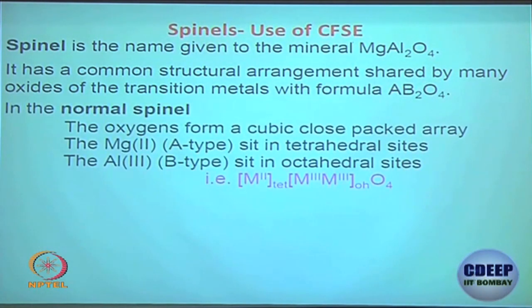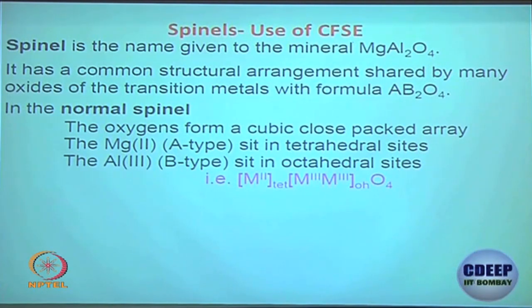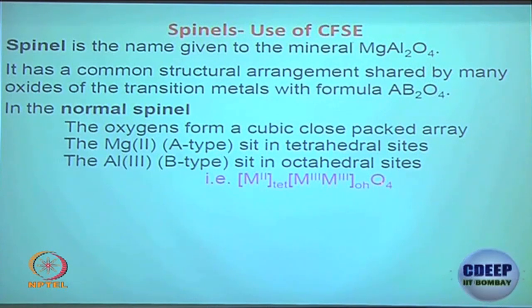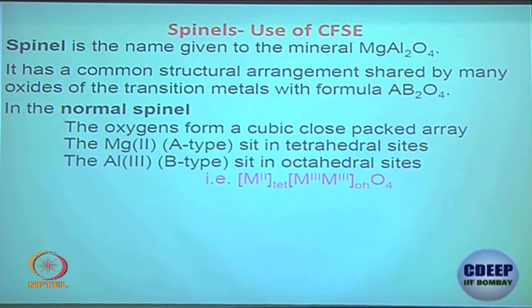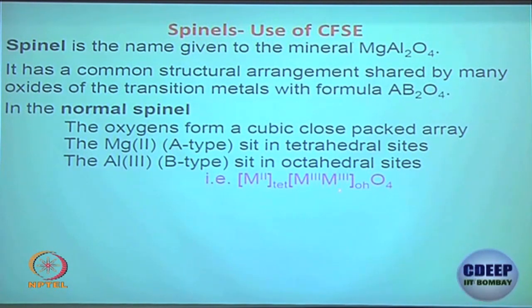AB₂O₄ is the general formula for spinel. There are two types of spinel: normal and inverse spinel. Normal spinels are the ones where O₄ means four oxides, each minus 2, giving minus 8 total. That means you need a +3/+3/+2 charge combination. In normal spinel, octahedral geometry is preferred by 3+ metals and tetrahedral geometry is preferred by 2+ metals.